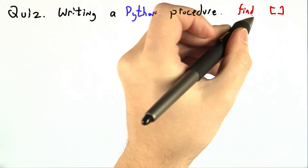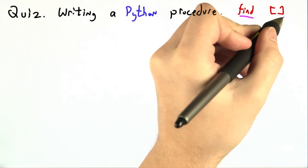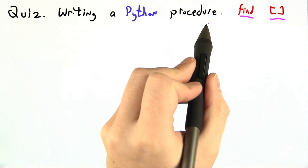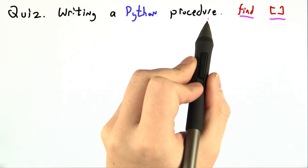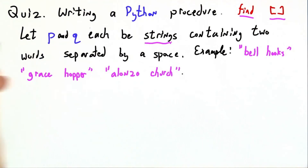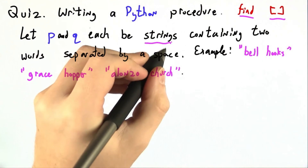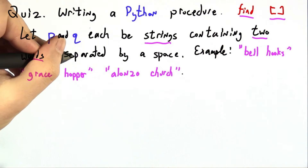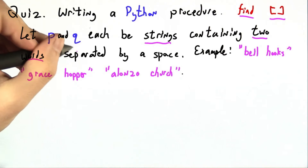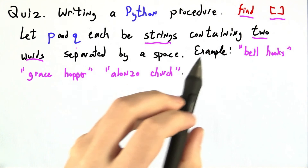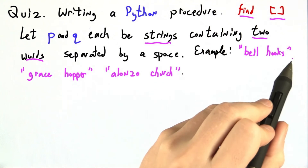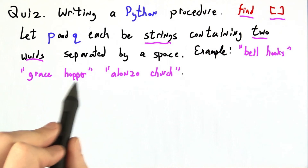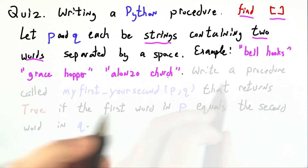So now that we know how to find strings and how to chop them up, let's combine that together and write a Python procedure. Let's say that you're given two strings, each of which itself contains two words separated by a space. So these strings might be 'bell hooks', 'grace hopper', or 'alonzo church'.